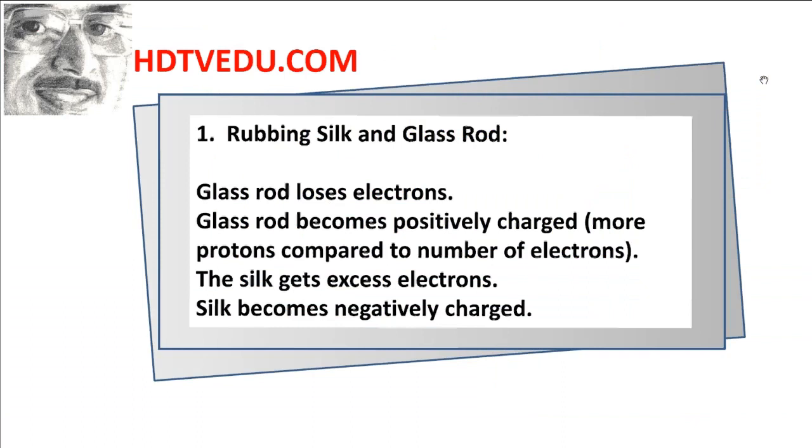When you rub silk on a glass rod, the glass rod loses electrons. Remember, before you rub, it is neutral. When you lose electrons, you have an excess number of protons compared to the number of electrons. So the glass rod becomes positively charged. The silk gets excess electrons and becomes negatively charged because you now have more electrons than the number of protons.